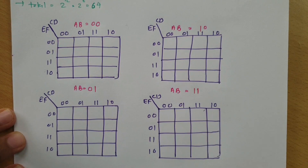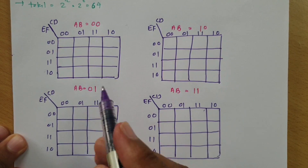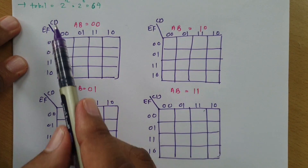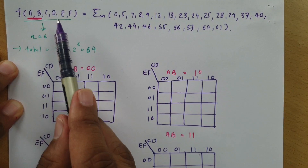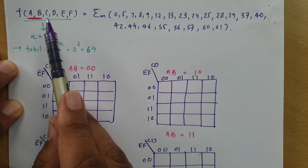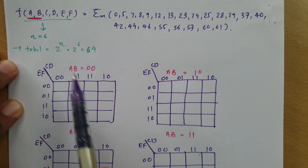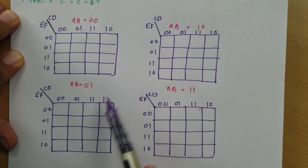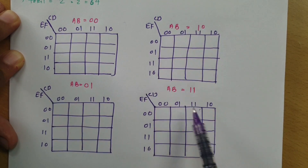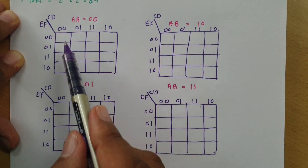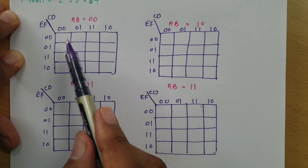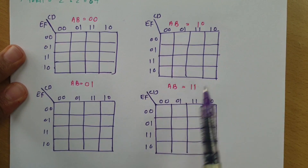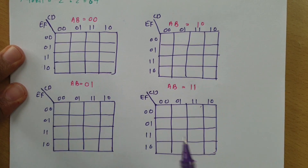Now you can clearly see what I have done: I have bisected ABCDEF into AB and CDEF, where AB takes values 00, 01, 10, and 11, and CDEF follows the standard 16-cell K-map structure. That is how I have dissected the map.